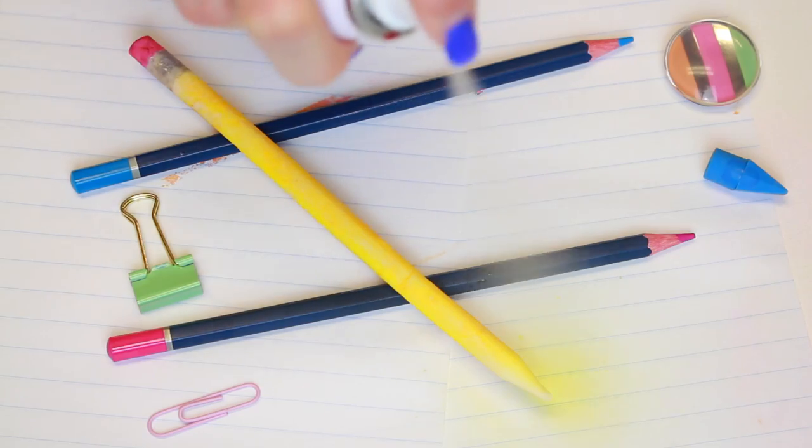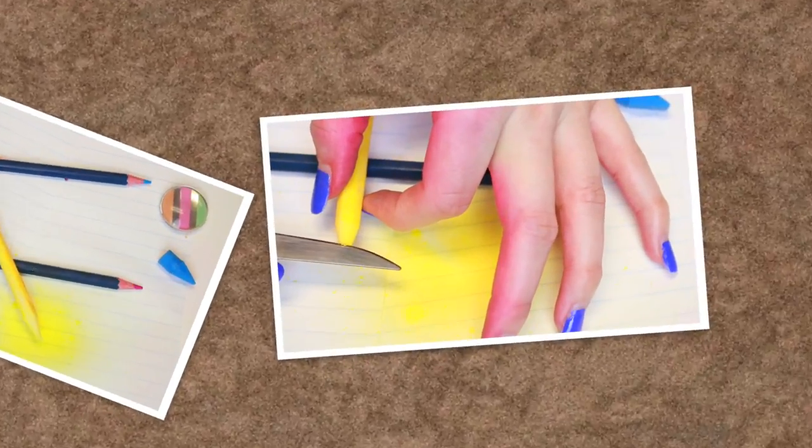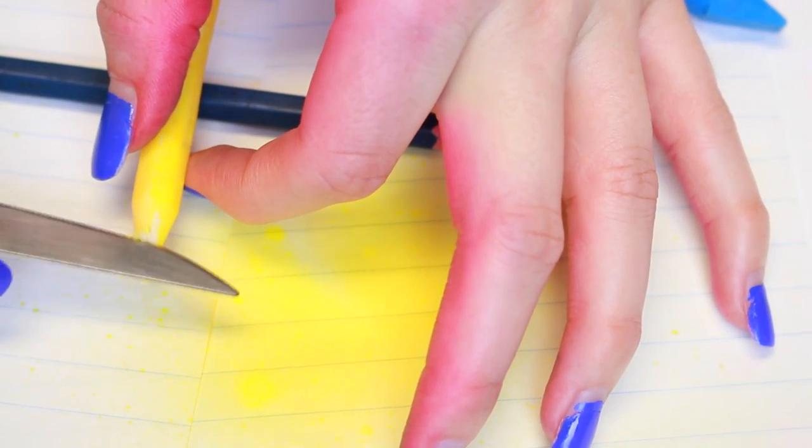Next I sprayed the rest of the pencil with yellow food spray to prepare it for sharpening. So to give it that realistic sharpened look I shaved off the area between the base and the lead tip and it came out perfect.